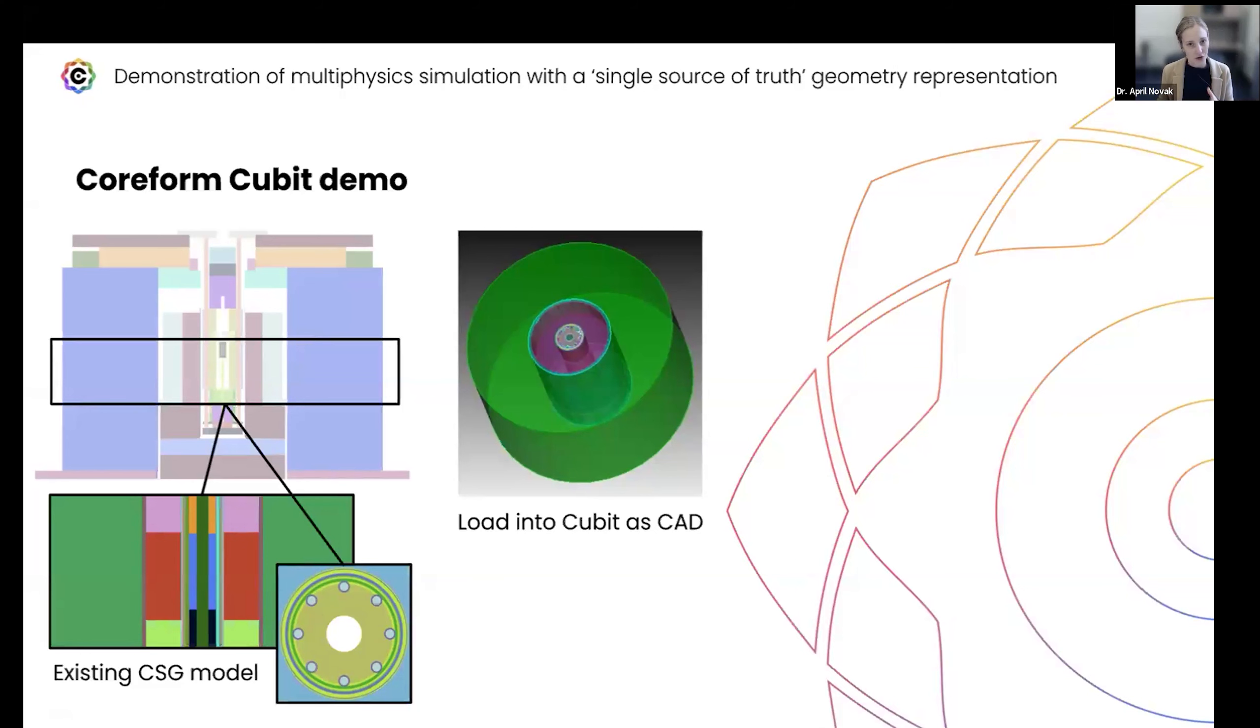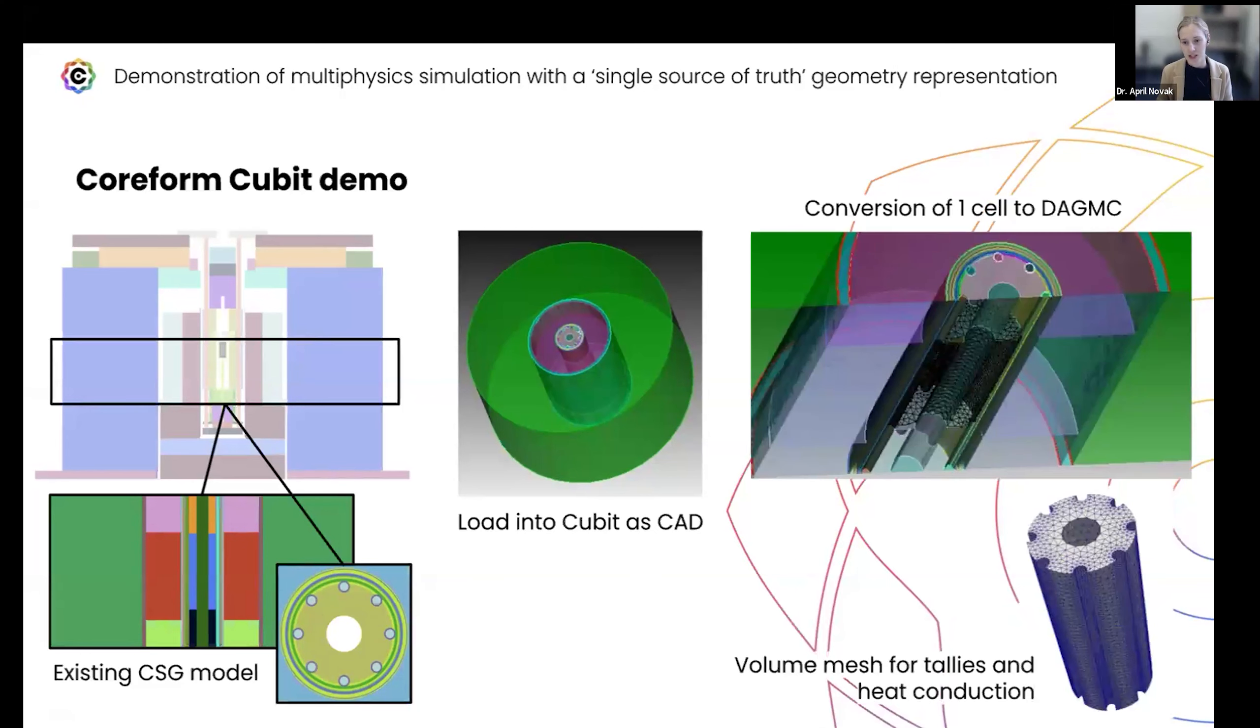Patrick is then going to take this and generate two different meshes from this. We're going to generate a surface mesh of the fuel, converting a single cell from CSG into DAGMC geometry. That's shown here in the top right.